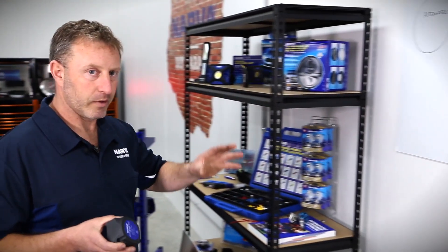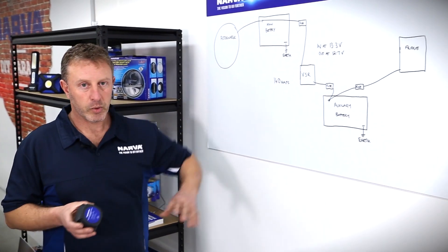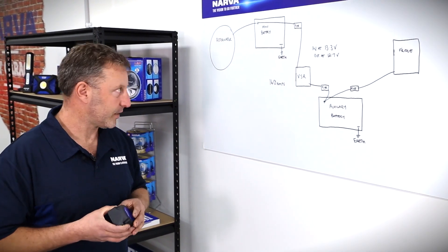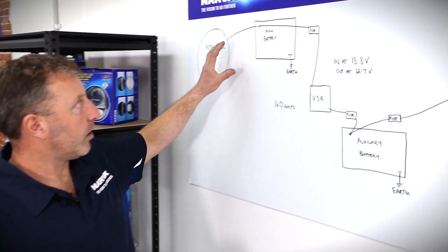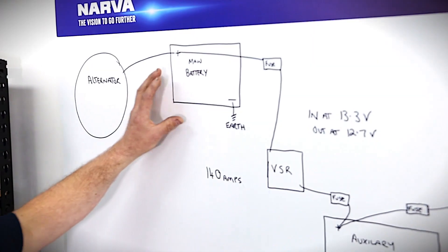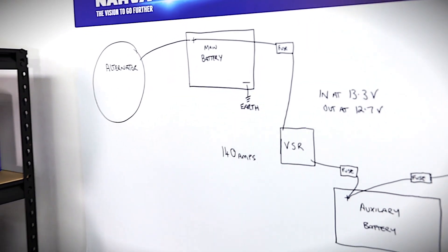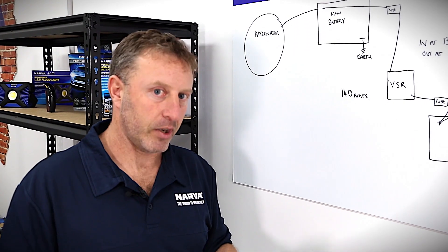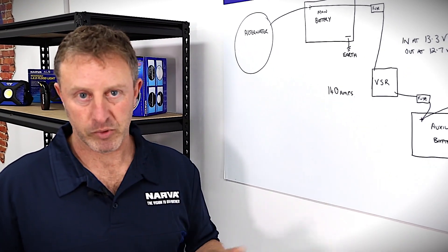Moving over to the wall here, I've created a quick diagram so I can show you what it does. Our alternator obviously charges our main battery, which keeps our main battery topped up while driving so it never goes flat and you can start the car and move whenever you want.